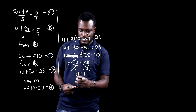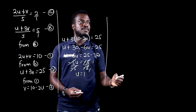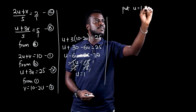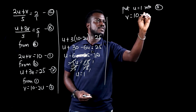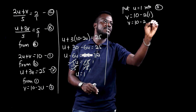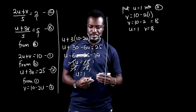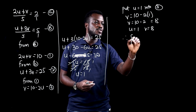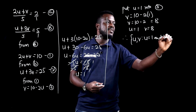Now that we have u, we substitute u = 1 into equation 3. So v = 10 − 2(1) = 10 − 2 = 8. Therefore v = 8. The solution set is: {(u, v) such that u = 1 and v = 8}.